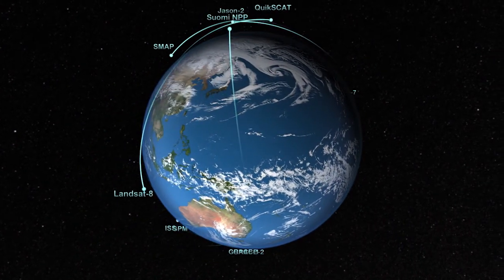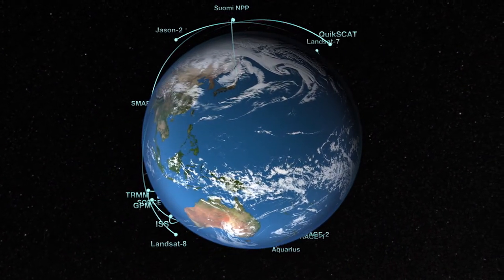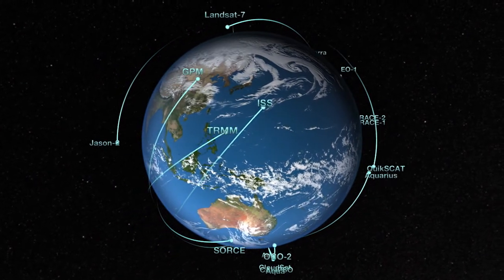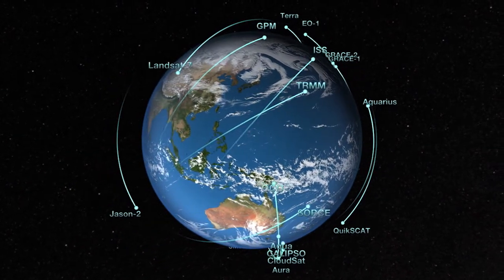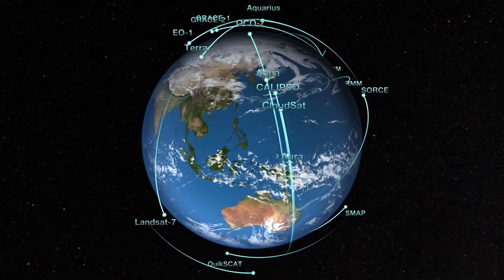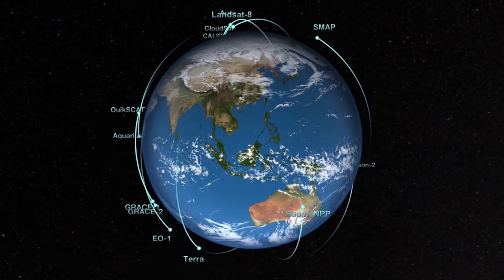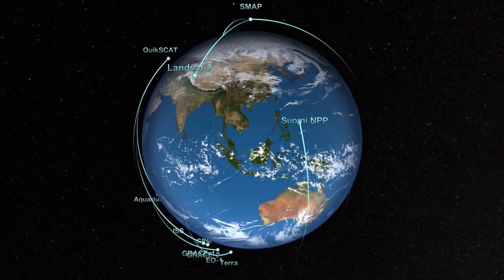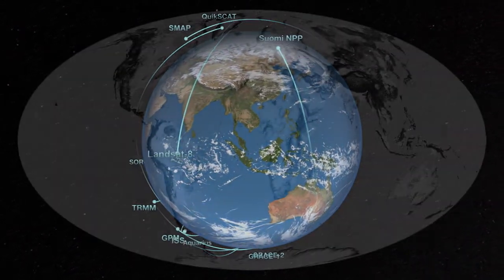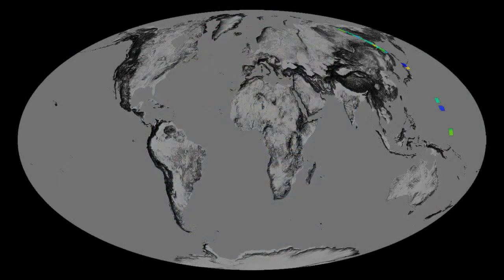The Earth is a complex system, and scientists are continually investigating the intricate workings of our home planet. Part of what makes the Earth so unique is its climate. Many scientists are concerned that Earth's climate is changing at an unprecedented rate. How do scientists study how warm the planet is?